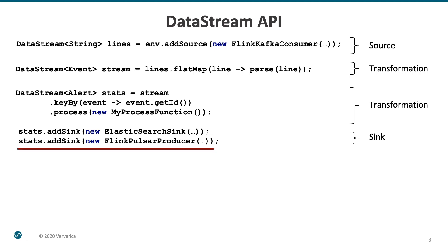At the end, you add one or more sinks for the results of your computations. You can, for instance, write them out into a system that materializes the current state as the final result, like a database, or keep treating the data as a stream and write all the updates into a message broker for further transformations downstream. The data stream API actually contains a lot of utility functions out of the box for working with time windows, doing aggregations, and other useful transformations on your data stream.